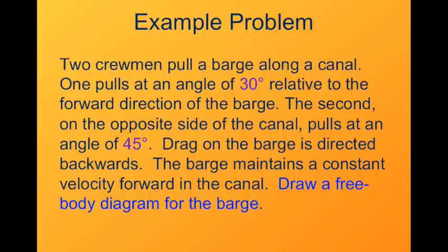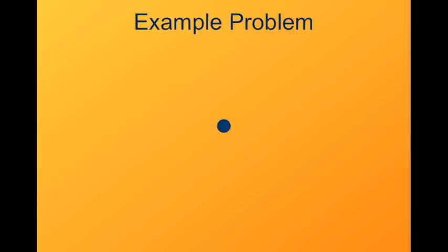What we're going to do is draw a free body diagram for the barge. We have three forces that we're going to worry about: the force from the first crewman, the pull from the second crewman, and the drag on the barge. So here's how we start off. There's the barge. Does that look like a barge? No, it doesn't. It's an abstraction. It's just a point, and we're going to direct all the forces on that point.